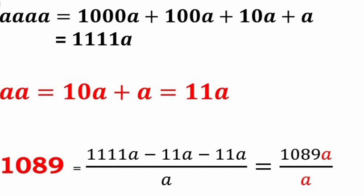AAAA equals 1000A plus 100A plus 10A plus A, which equals 1111A. Similarly, AA equals 10A plus A which equals 11A. So the expression becomes: 1111A minus 11A minus 11A, all divided by A, which equals 1111A minus 22A divided by A, equal to 1089A divided by A. The A's cancel, giving us the constant 1089.